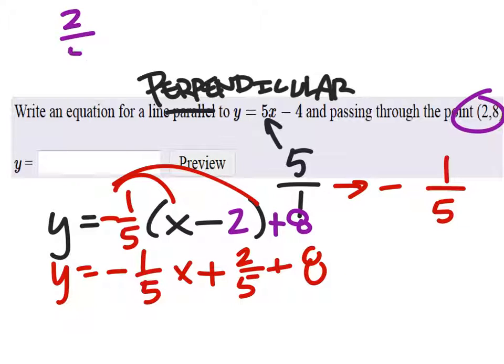So I got 2 fifths plus 8, but 8 would be the same as 40 fifths. So that would end up being 42 fifths.